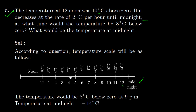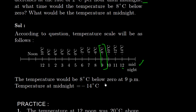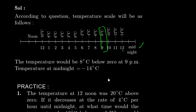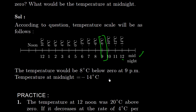सर्थी बढ़ती जा रही है, है न? फिर 2 कम करो — माइनस 2, और माइनस 2, और माइनस 2, और माइनस 2. तो यह देखो, below 0 — 0 से भी नीचे — कहां आया? माइनस 8 degree.